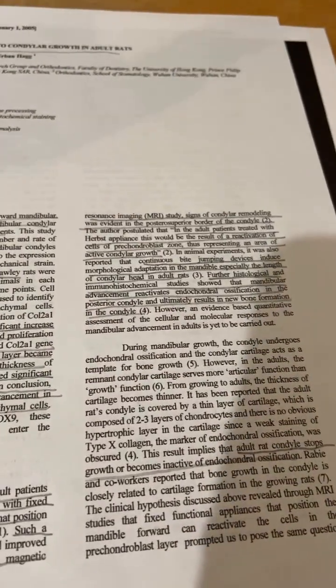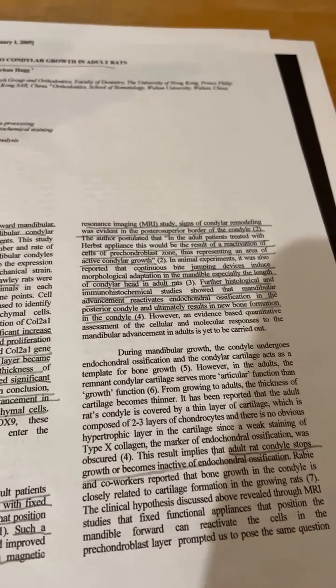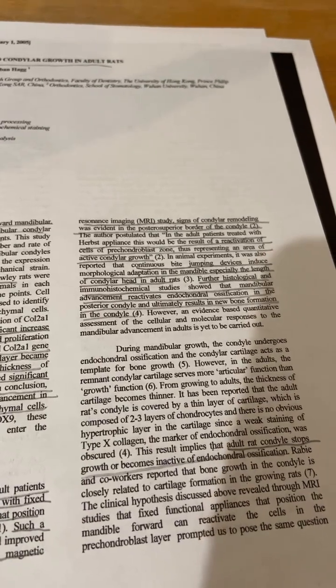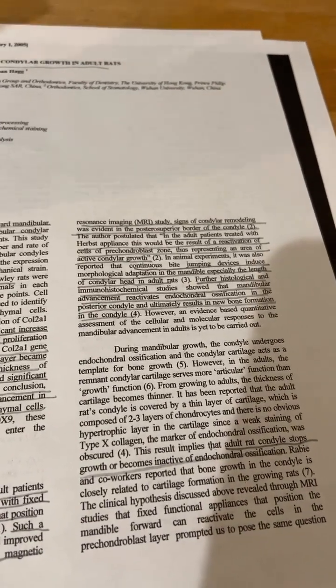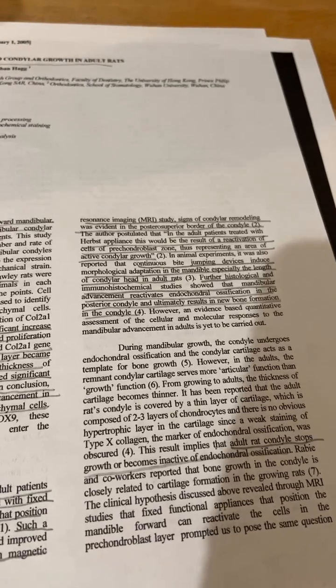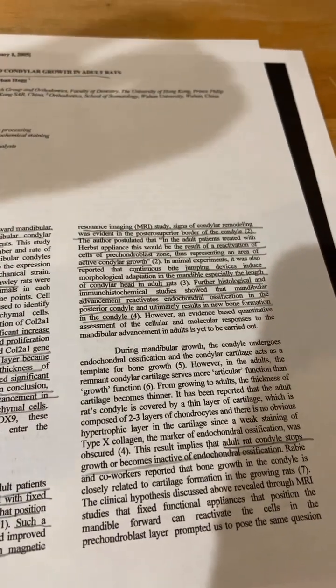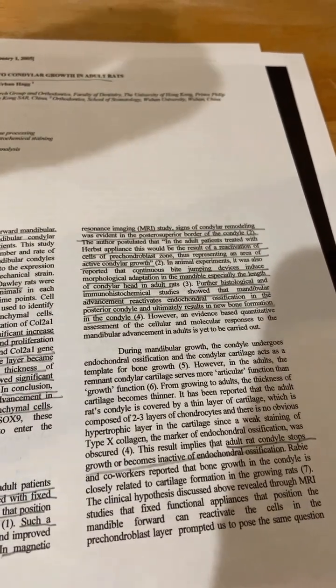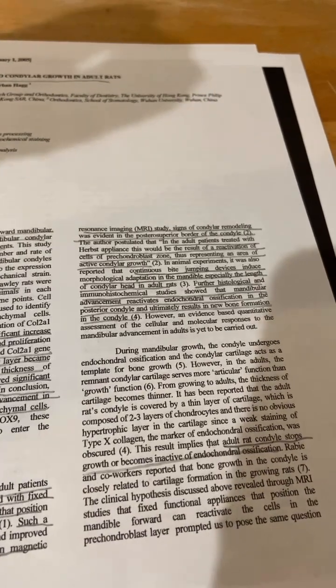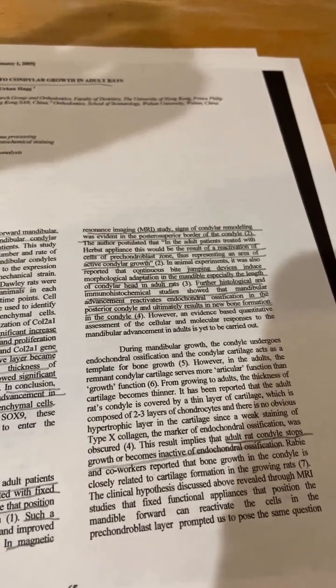or not the growth plate because there's not really a growth plate, but in the articular cartilage. So what could happen is you induce endochondral ossification of the articular cartilage and grow gradually taller that way.